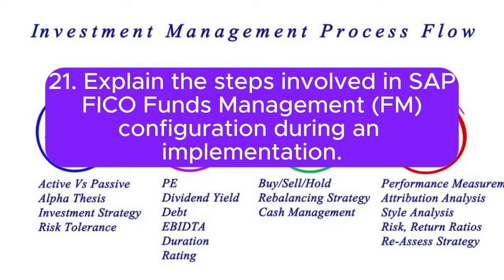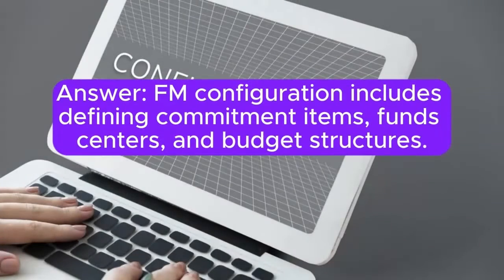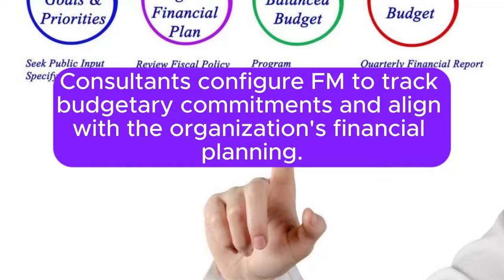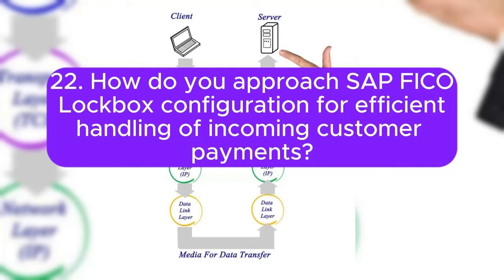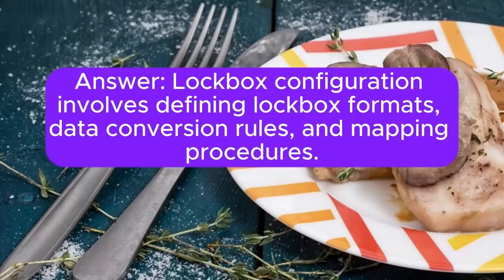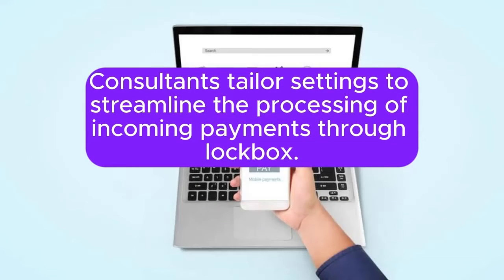Question 21: Explain the steps involved in SAP FICO Funds Management (FM) configuration during an implementation. FM configuration includes defining commitment items, fund centers, and budget structures. Consultants configure FM to track budgetary commitments and align with the organization's financial planning. Question 22: How do you approach SAP FICO lockbox configuration for efficient handling of incoming customer payments? Lockbox configuration involves defining lockbox formats, data conversion rules, and mapping procedures. Consultants tailor settings to streamline the processing of incoming payments through lockbox.